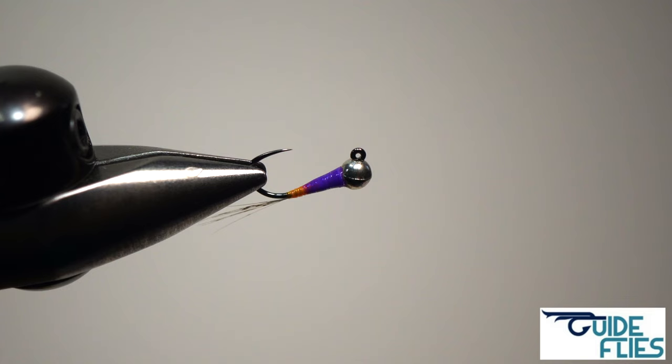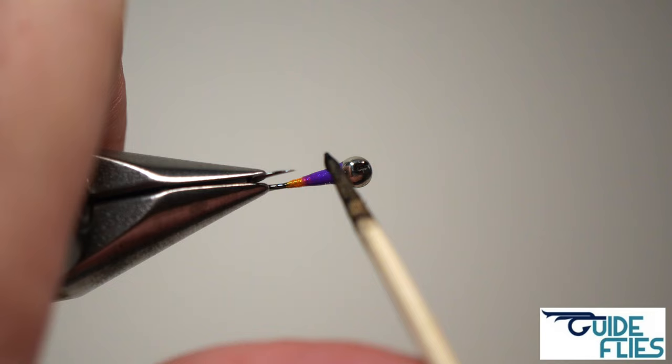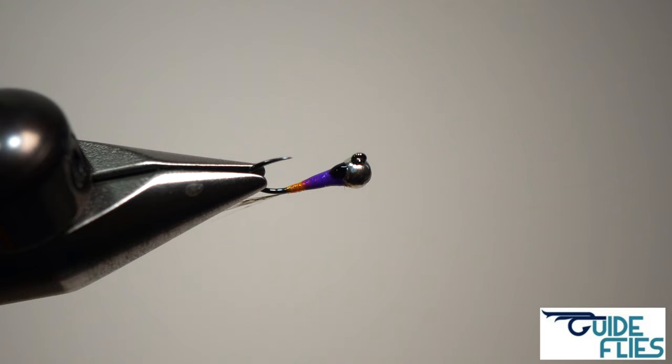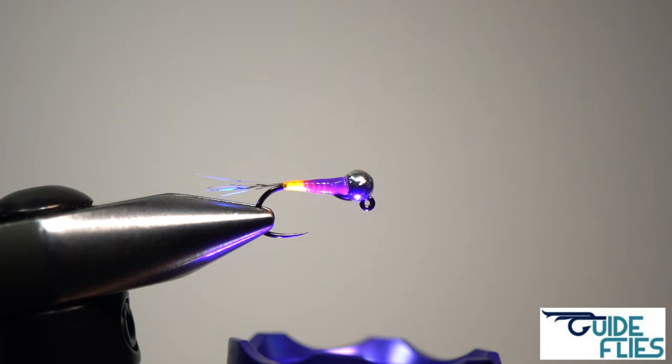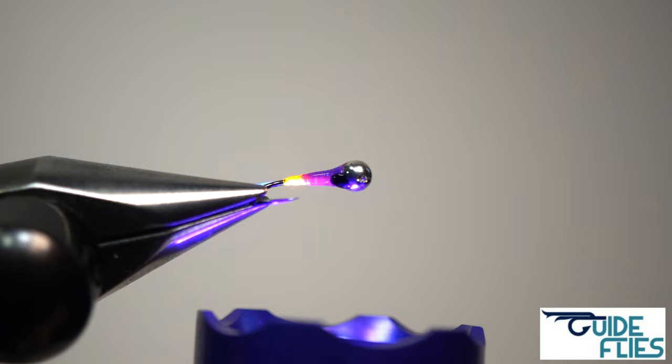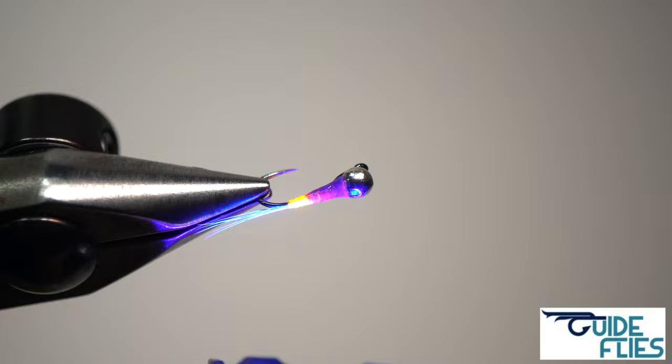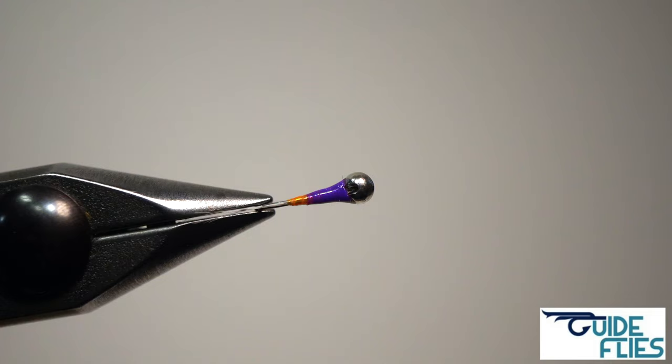Now I'm just going to take a little bit of black Solaris medium that I dye black and I'm just going to make my wing case there. Just a little highlight on the fly. You can put it over the slot of the bead if you want, or behind the hook eye, wherever you want to put it. You'll see it all different places from different tiers, but that is the Rumble Bomb.